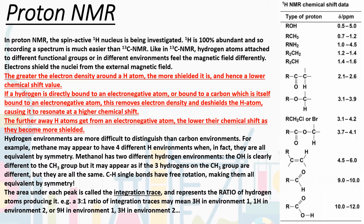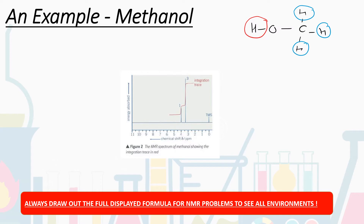You'll be given a table with different functional groups, different environments for these hydrogens to be in, and where their approximate chemical shifts come. For the methanol example, we have two environments: the OH hydrogen, circled in red, is clearly in a different environment to our CH₃ group. While those three hydrogens may appear to be in different environments, due to symmetry and free rotation around the CH bonds, they are actually all in the same environment. We should expect to see two peaks in our NMR spectrum.